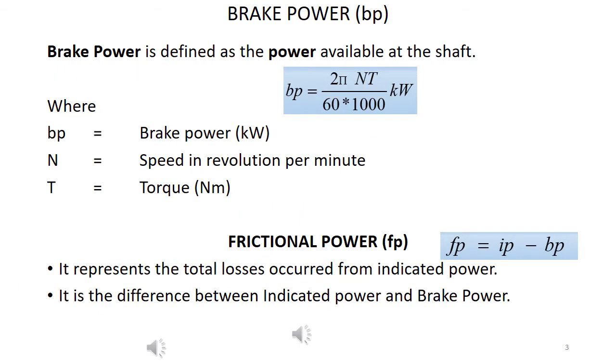Brake power. Brake power is the power available at the shaft. It is given by 2 pi NT by 60,000 in kWatts. Where N is speed in revolution per minute, T is the torque given in Newton meter. Where T equals force into radius, i.e. F into R. F is tangential force on crank, R is the crank radius.